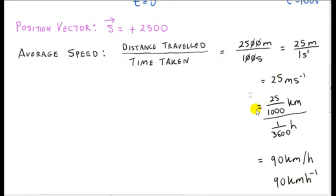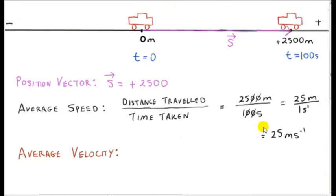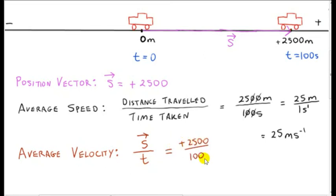More usually, we will work in meters per second. Now, average speed is a scalar quantity. Let's consider average velocity — this is a vector quantity. To get the average velocity of an object, we need to get its final position vector and divide by the time taken for the journey. Here we also get 25 meters per second, but to emphasize that we are talking about a vector quantity, we put in a plus sign. What we did was take a vector quantity — the final position vector of the car — and divide by a scalar quantity, the time. So all we did was scale the vector s by a factor of 1 over 100.